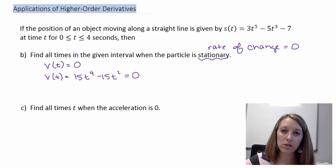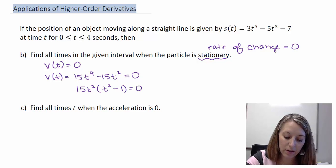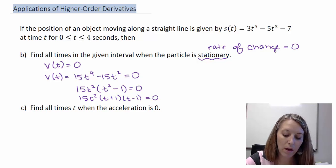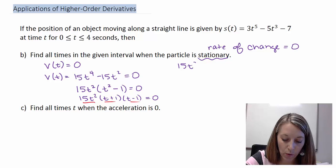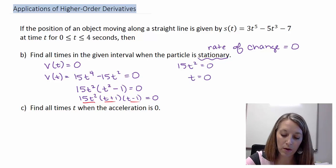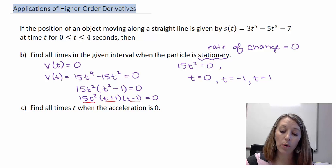This is a degree-4 equation, so we solve by factoring. We factor out the common factor 15t², leaving t² minus 1. That's a difference of squares, so it factors as (t + 1)(t − 1). Setting each factor equal to 0 gives t = 0, t = −1, and t = 1. These are all the times where velocity equals 0, meaning the particle is stationary.